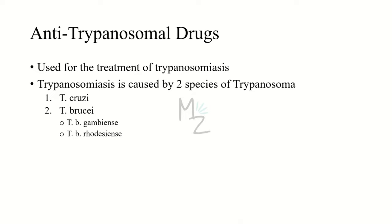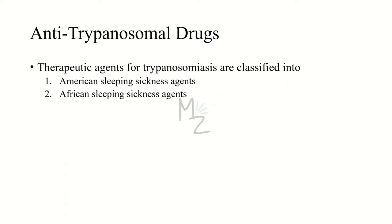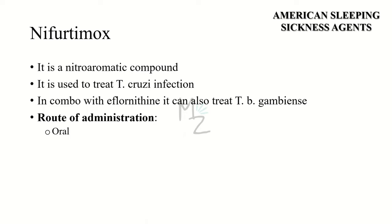Now let's look at anti-trypanosomal drugs, which work against trypanosomiasis. Trypanosomiasis is caused by two species of Trypanosoma: Trypanosoma cruzi, responsible for Chagas disease, also called American sleeping sickness; and Trypanosoma brucei, which has two subspecies — T. brucei gambiense and T. brucei rhodesiense — responsible for African sleeping sickness. Therapeutic agents are classified into those for American sleeping sickness and those for African sleeping sickness.